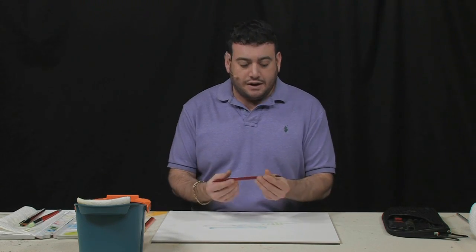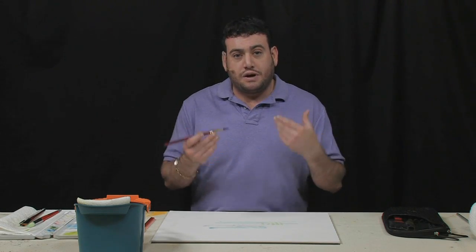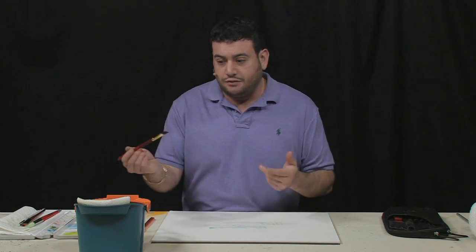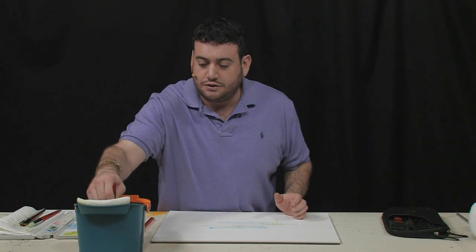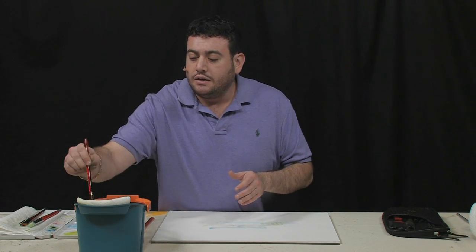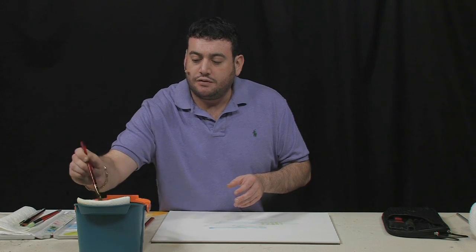Now, the loose hairs are just the nature of manufacturing. They're going to be in any brush at any time, and there's a way to prep it. So, all you do is, after you've gotten the starch out, you continue to get it wet and then carefully blot it.